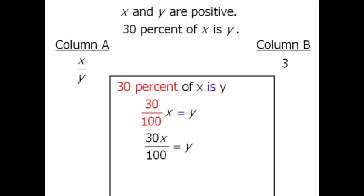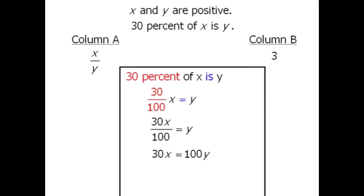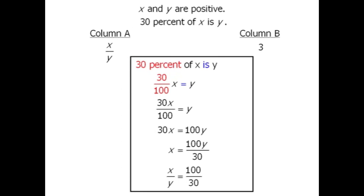From here let's solve for x over y. First we'll multiply both sides by 100 and now we'll divide both sides by 30. Finally we'll divide both sides by y so that we have x over y on the left hand side.